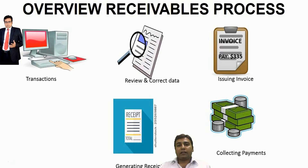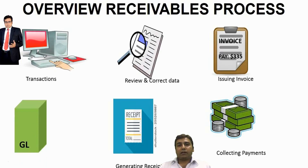After receiving money from the customer, cash comes into the company — so cash is debited and Accounts Receivable is credited. Accounting entries are generated in the sub-ledgers and transferred to the General Ledger through SLA (Sub-Ledger Accounting), which is the true representation of the accounting of sub-ledgers.